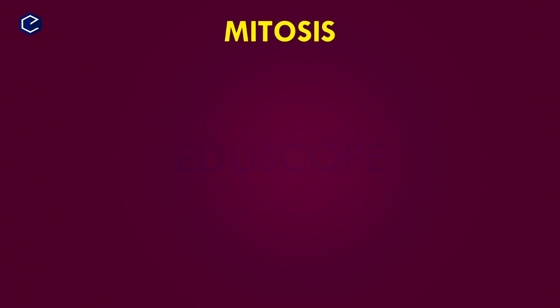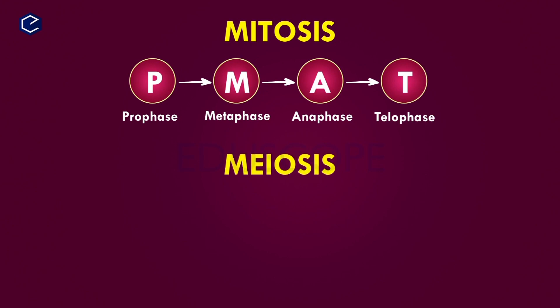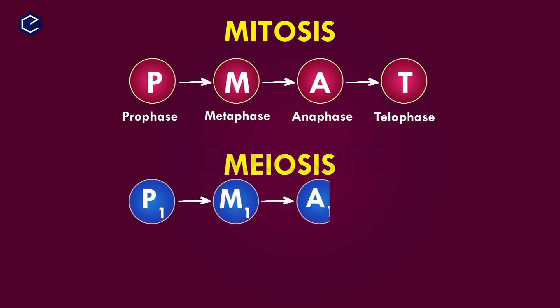Mitosis has four stages: prophase, metaphase, anaphase, and telophase. Meiosis is more complex — it is divided into two parts: meiosis I and meiosis II. The stages of meiosis I are: prophase 1, metaphase 1, anaphase 1, and telophase 1.